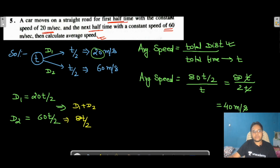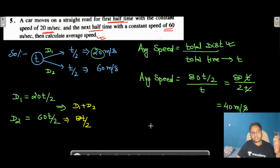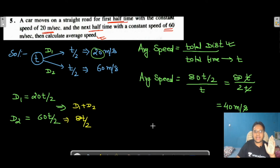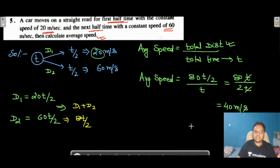So the average speed for Question 5 is 40 m/s. Questions 6 and 7 will be covered in the next video. Please subscribe to the channel and check the playlist — whenever a new video is uploaded, you will find it there.